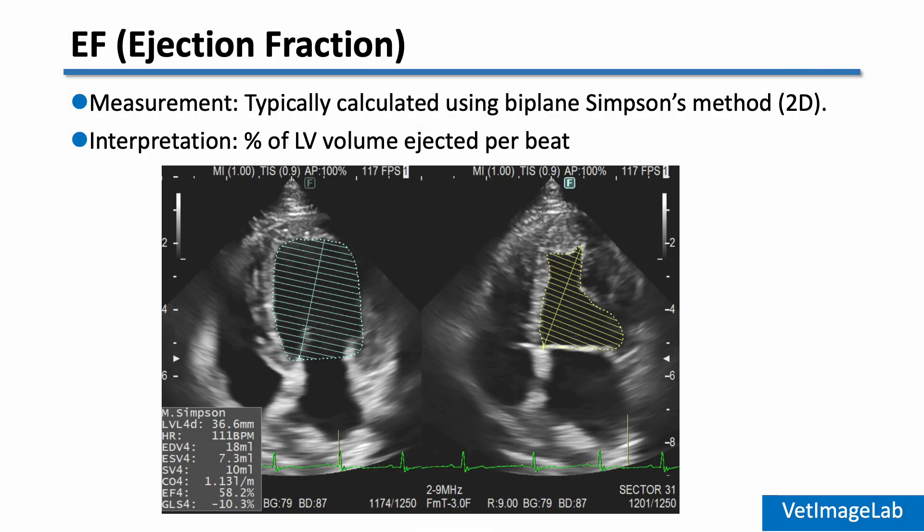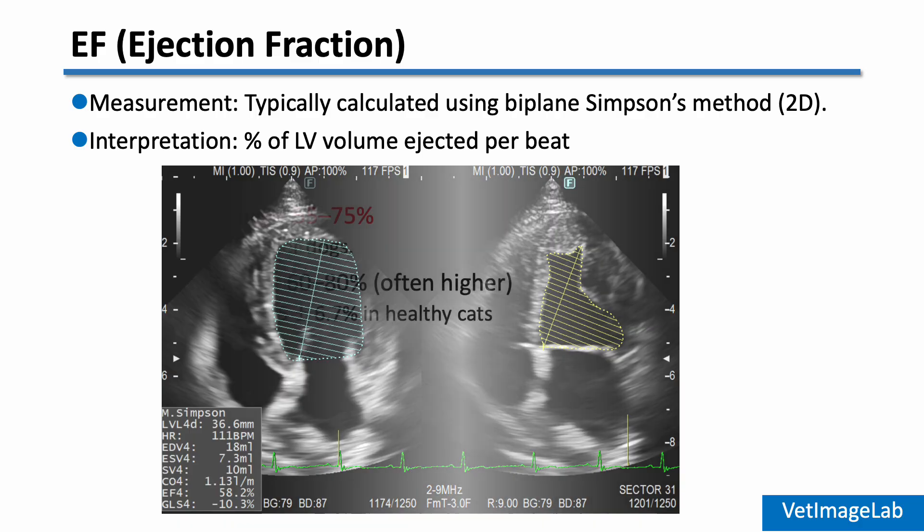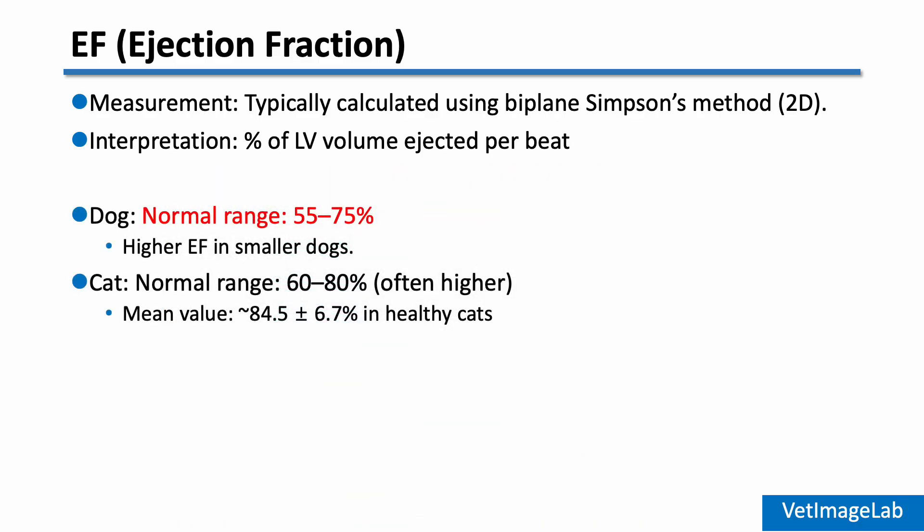Next is ejection fraction, or EF. EF tells us what percentage of the left ventricular volume is ejected with each heartbeat. It's usually calculated using the biplane Simpson's method on 2D images. In dogs, the normal EF range is about 55 to 75 percent. Smaller dogs may have slightly higher values, especially if they are excited or anxious during the scan.